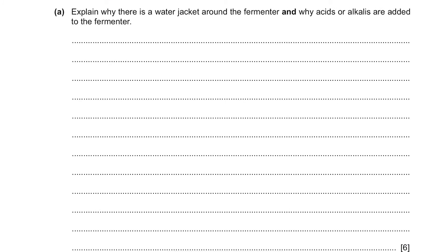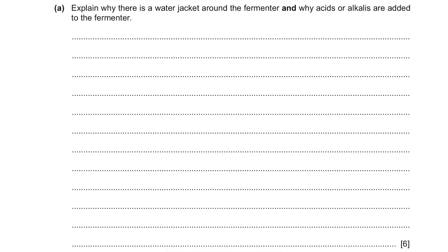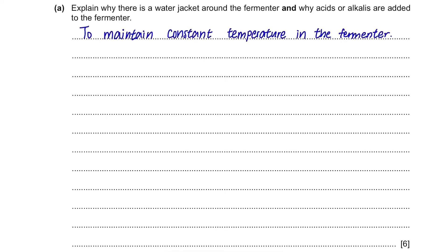Part A. Explain why there is a water jacket around the fermenter and why acids or alkalis are added. The water jacket is to control the temperature — by supplying water at the desired temperature, we can maintain the fermenter's temperature. The enzymes and proteins are sensitive and may denature if the temperature is too high. Also, the fungus inside will respire, releasing heat, which could increase the temperature and kill the fungus, stopping penicillin production. So we use cooling water to keep the temperature constant.